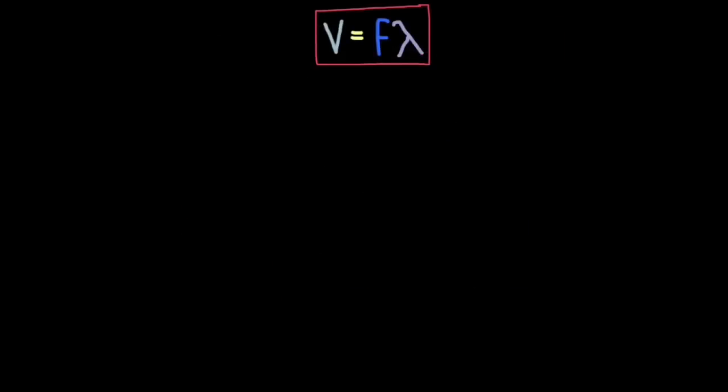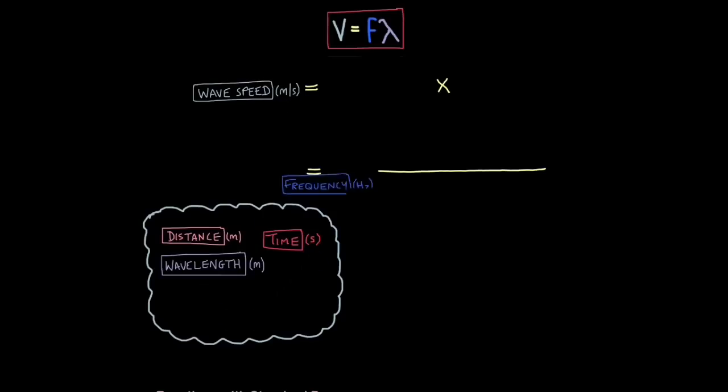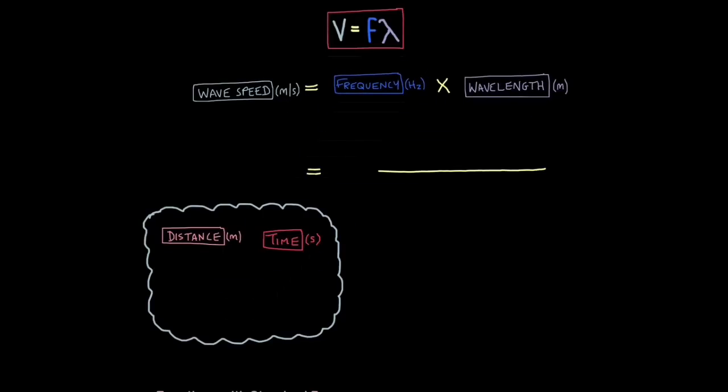So now let's look at the actual equation itself. The equation can be expressed as velocity, wave speed, how fast it travels, equals frequency of a wave, times by the wavelength. So I've got wave speed here, I've got frequency here, and I've got wavelength here.